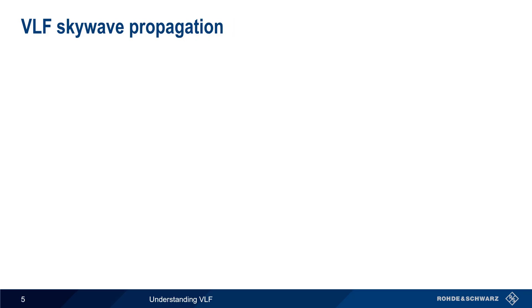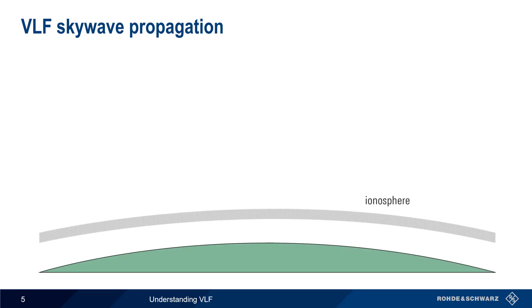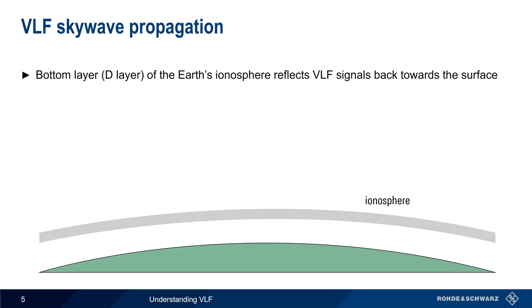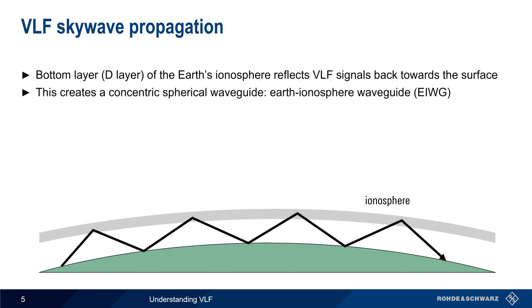VLF sky wave propagation involves the ionosphere, which is a layer of charged particles above the upper regions of the Earth's atmosphere. The ionosphere is divided into layers, and the lowest of these, the D layer, can reflect VLF signals back towards the Earth. The result is a concentric spherical waveguide made up of the bottom of the D layer and the surface of the Earth, and this is often referred to as the Earth-ionosphere waveguide.